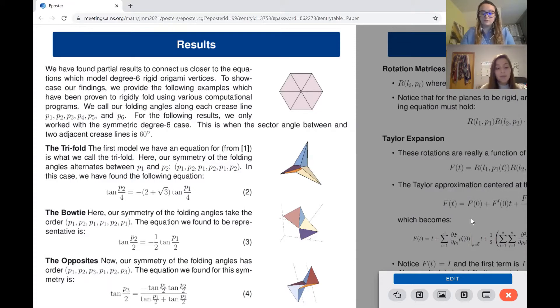Lastly, we have the opposites with angle symmetry p1, p2, p3, p1, p2, p3, and the resulting parameterized equation shows an algebraic relationship between the folding angle p3 in terms of p1 and p2.